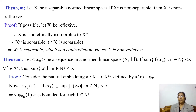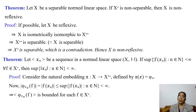We have previously proved that if x* is separable then x is separable. Here, since x** is separable, this implies x* is separable, which is a contradiction since x* is given as non-separable. We arrive at a contradiction, so our assumption is wrong. Hence x must be non-reflexive.